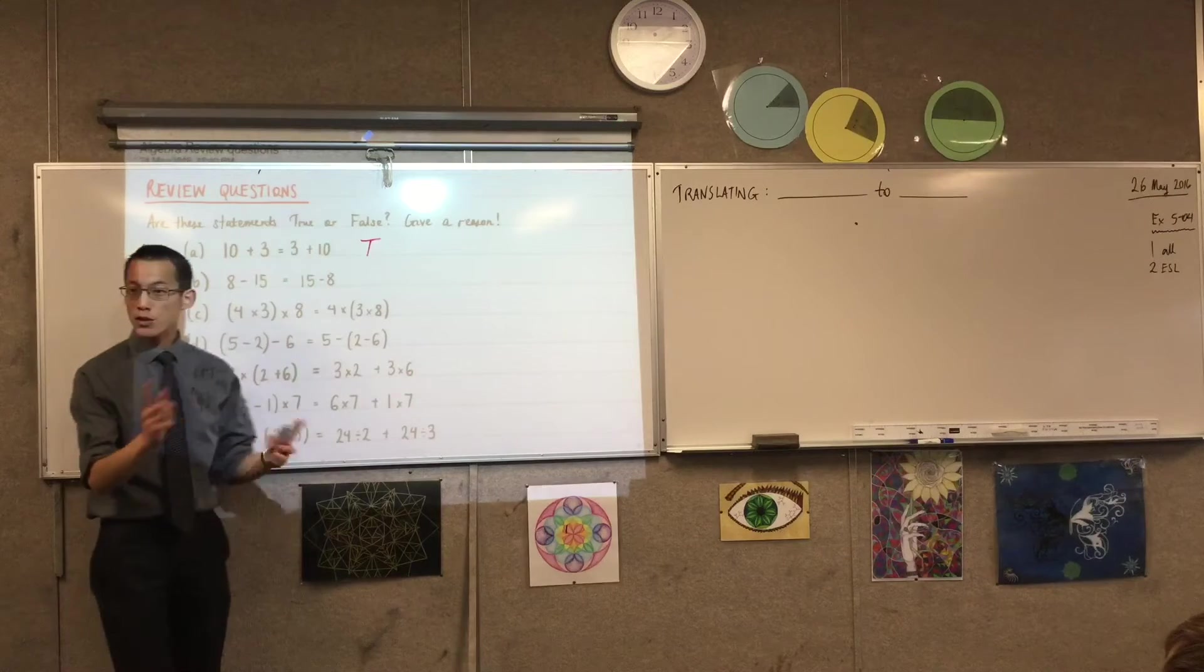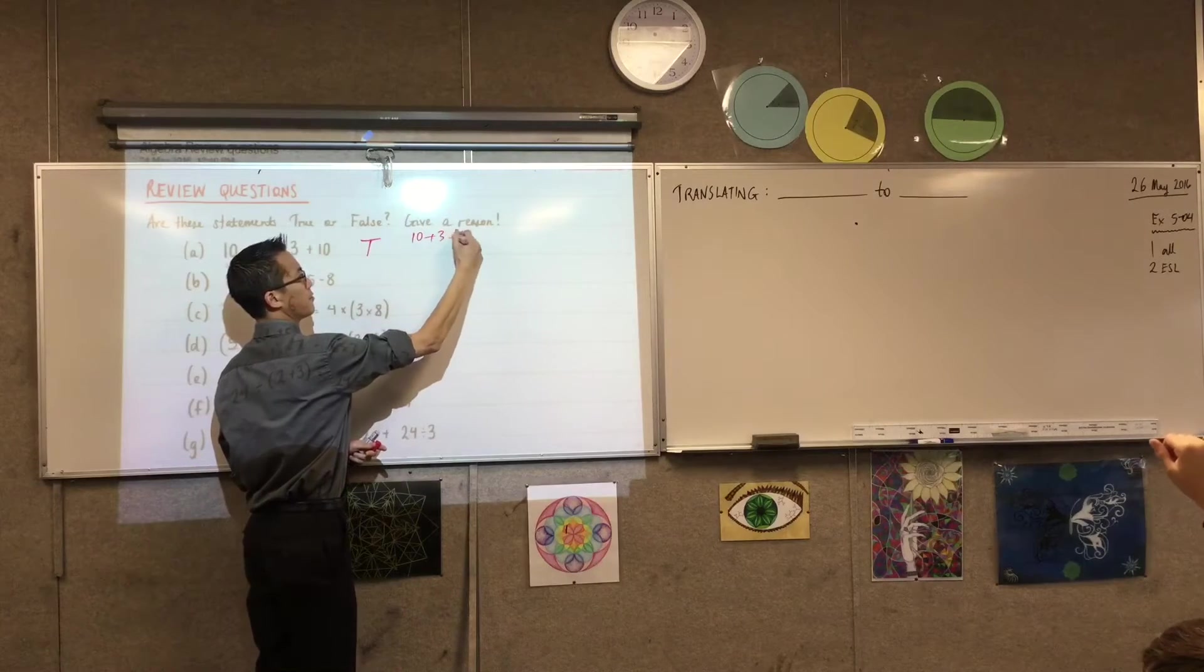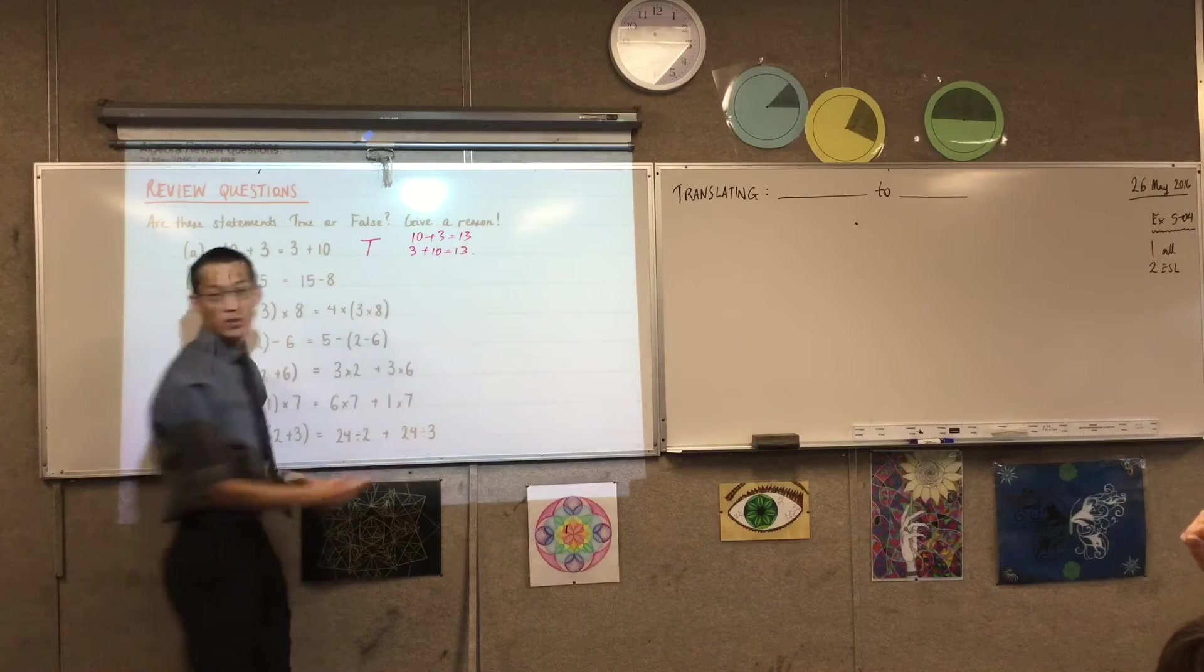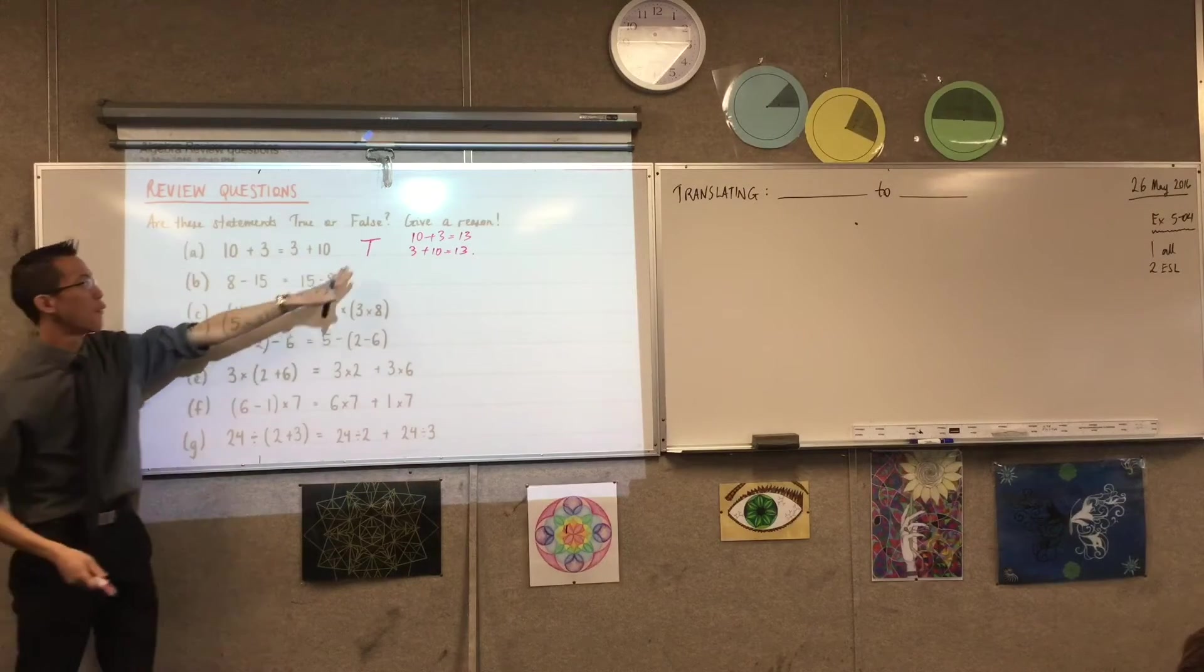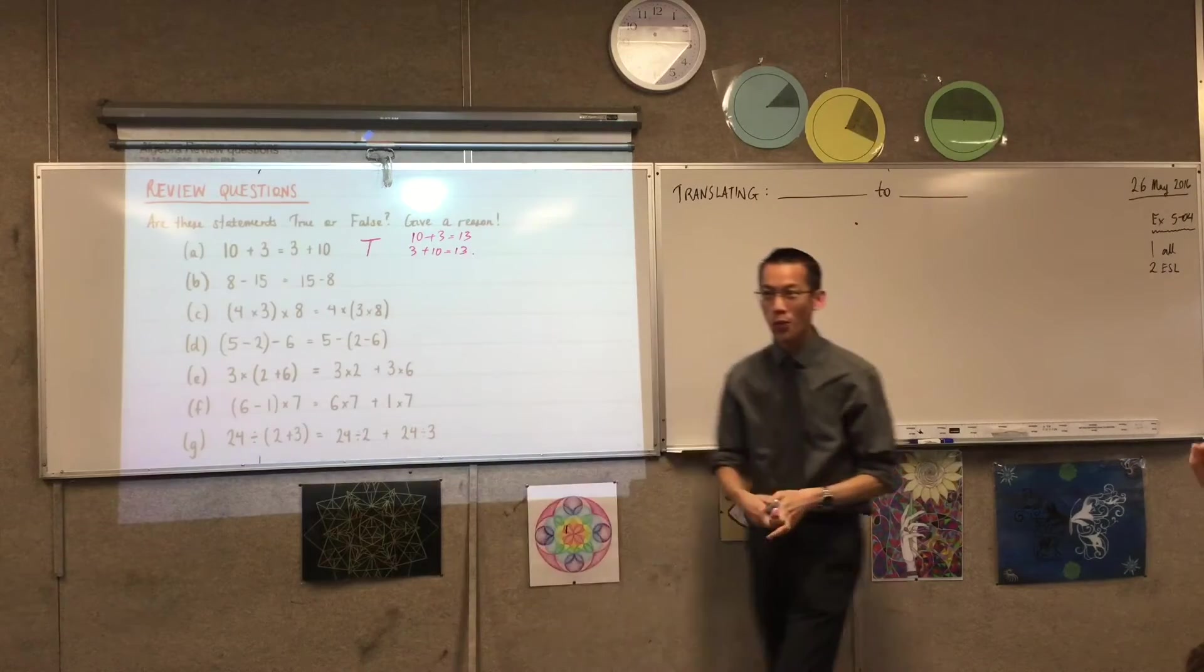Okay, so if you did this, if your reason looked something like this, this, and this, then cool. That's valid reasoning. That provides me an argument for why, well, if they're both 13, then they're both equal. Did anyone do it a different way?